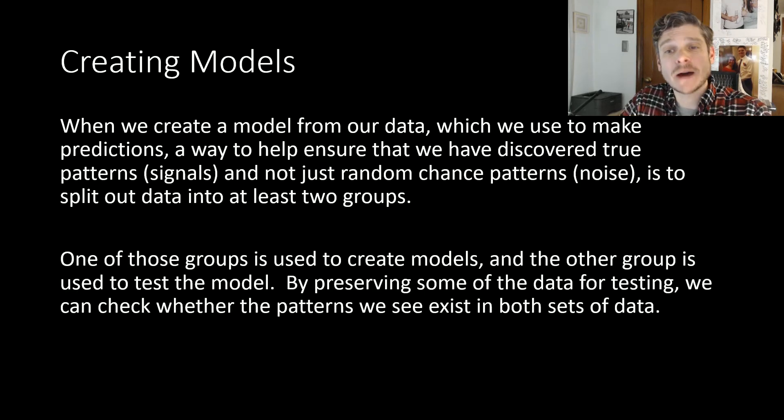So when we create our models from our data, which we're trying to use to make predictions, a way to ensure that we have discovered true patterns, which are our signals, and not just random chance patterns or noise, is to split our data set into two groups. One of these groups is used to create our model. This is called our training group, to train our model. Then we have to preserve some of our data as our testing data. So once we create our model, then we use our testing data and say, okay, does the model actually work for the testing data too?